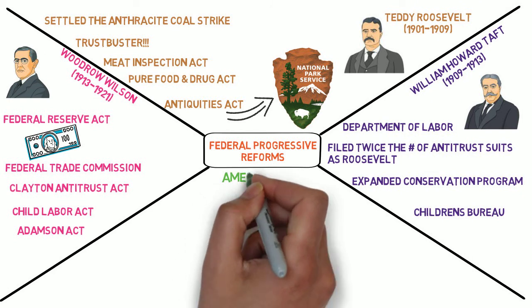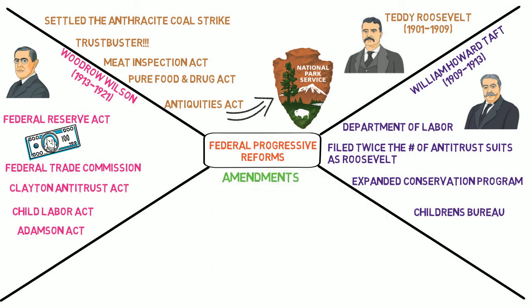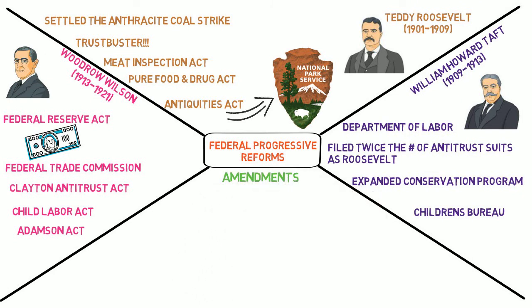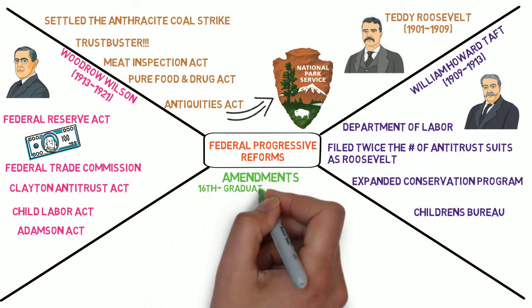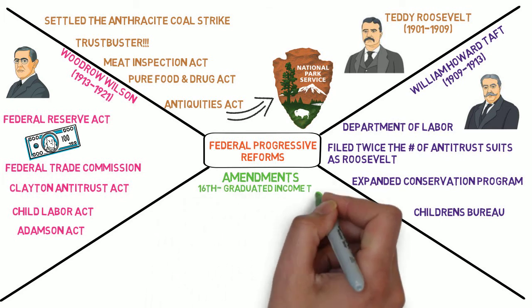Between 1913 and 1920, four constitutional amendments were ratified. In 1913, the 16th Amendment created the graduated income tax, which reformers felt was a fairer way to tax citizens based on their income. Prior to this, the government relied on excise taxes and tariffs, both of which had the effect of raising the price of goods — a burden that falls heaviest on those with lower incomes.